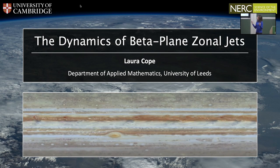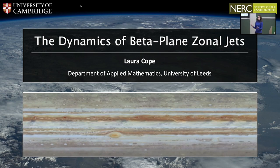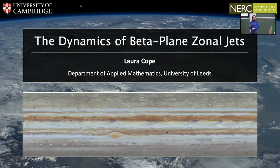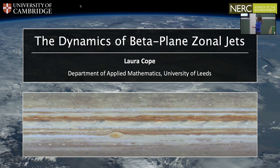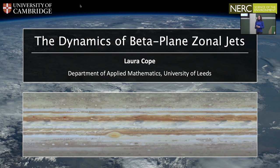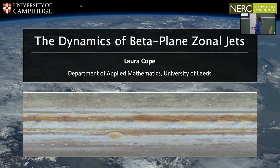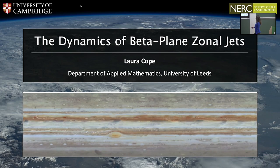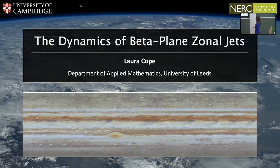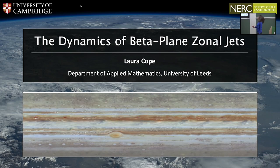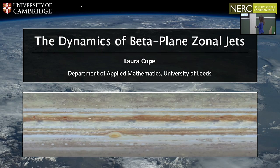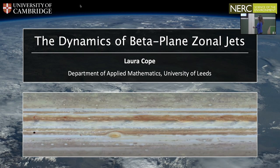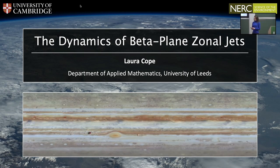So first of all, what are zonal jets? They're strong currents in fluid flowing in the east-west or the zonal direction. They can be seen in this video on my slide here, which shows the atmosphere of Jupiter. The alternating east-west currents that you can see are zonal jets.